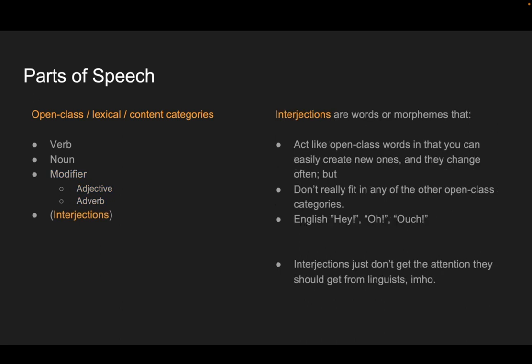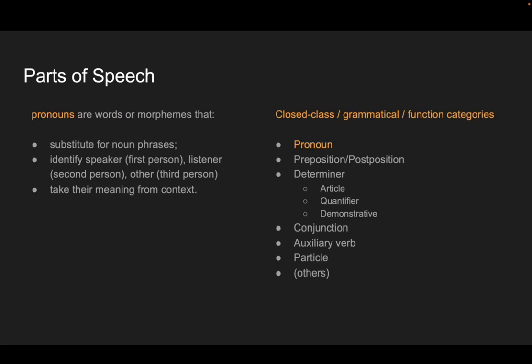The last of the open class parts of speech — interjections — are content words that don't fit any of the other categories, and we run into these a lot. Things like 'hey,' 'hello,' or 'ouch.' There are a lot of them, and we can make up new ones. They act like open class words, but they're not verbs, nouns, or modifiers. They're kind of their own thing and they're really fun. So those are the open class categories: verbs, nouns, modifiers, interjections.